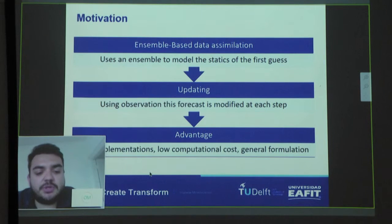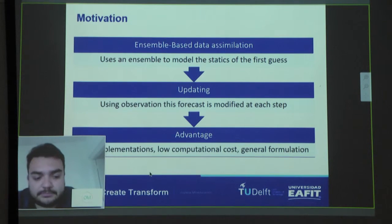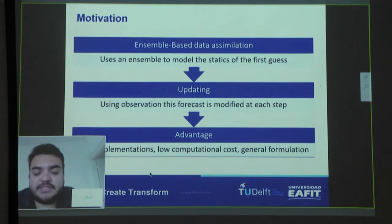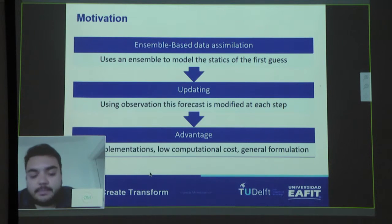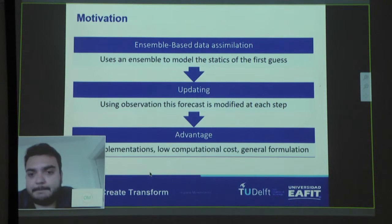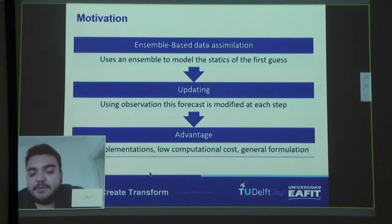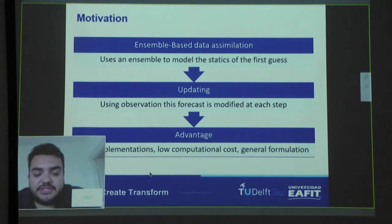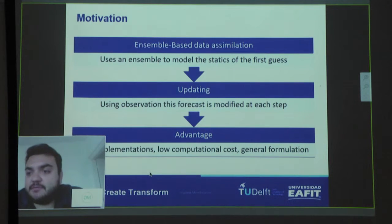The ensemble-based data assimilation uses an ensemble to model the statistics of the first guess or background of the model. In each assimilation step, a forecast from the previous model simulation is used as a first guess, and using the available observations, this forecast is modified to be in better agreement with those observations. Because of its easy implementation, relatively low computational cost compared with other families, and its very general statistical formulation, it is one of the most widely used methods for real-time forecasting problems.